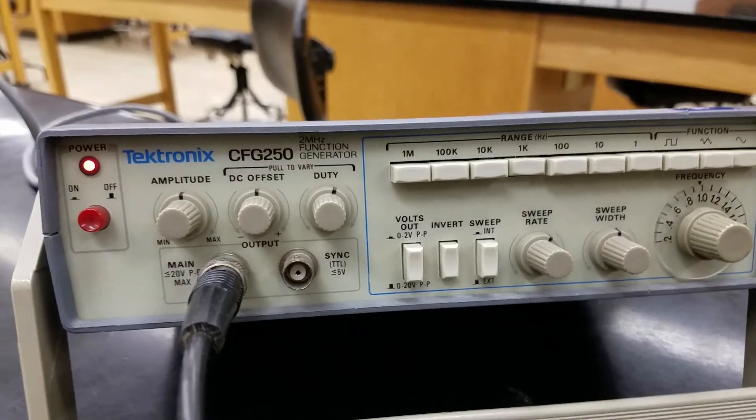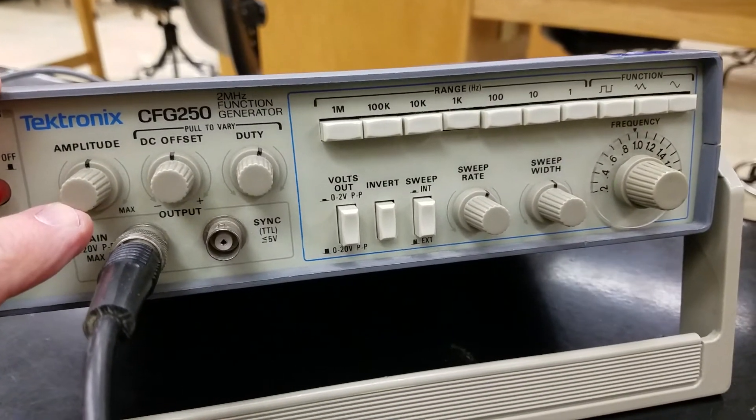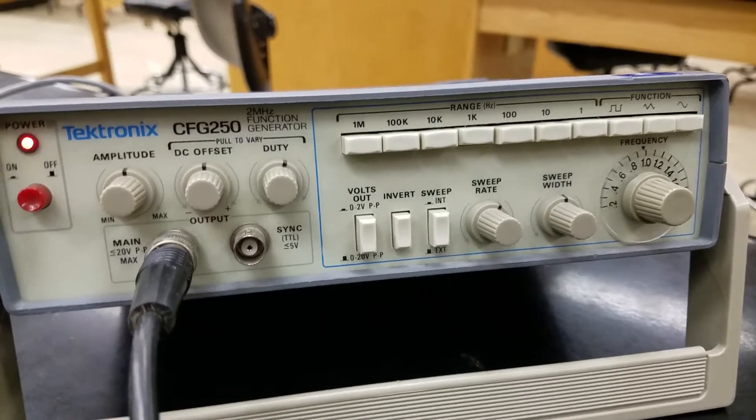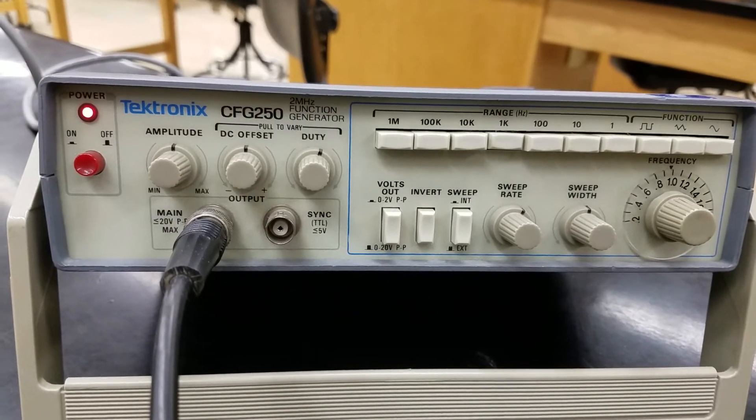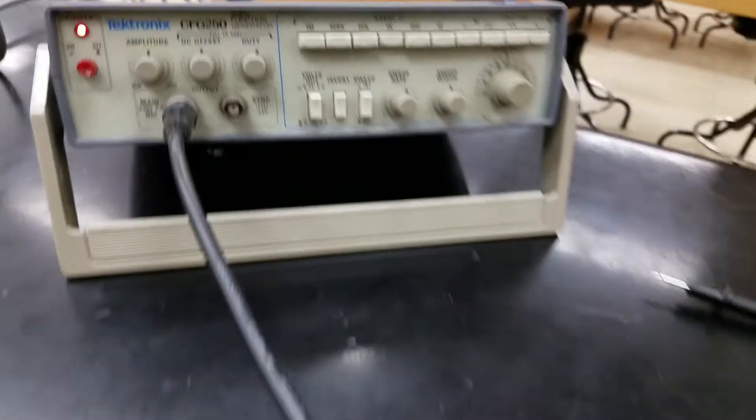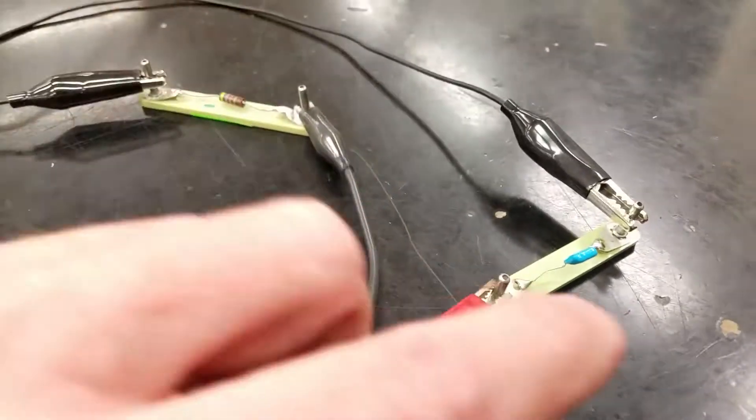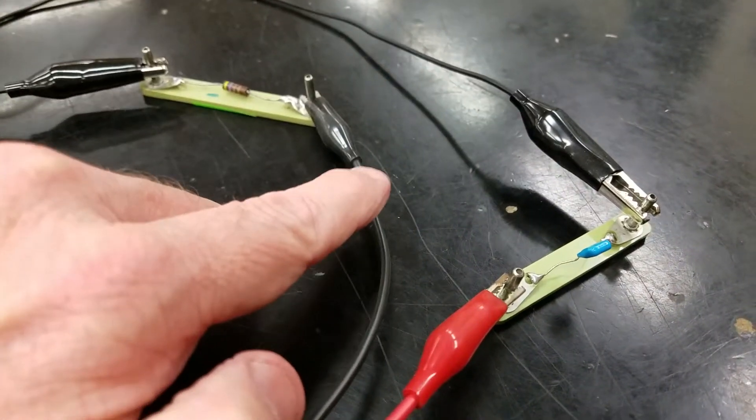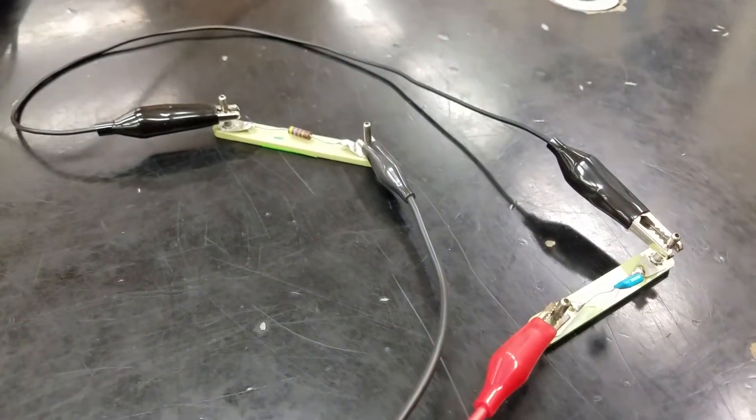The only other button I need to worry about is this amplitude button and I'll be varying this to ensure that the voltage drop across the two ends of the power supply. That voltage drop we want to keep that at a constant three volts.